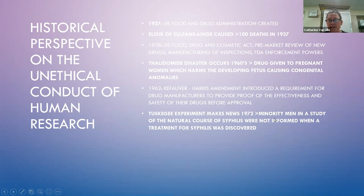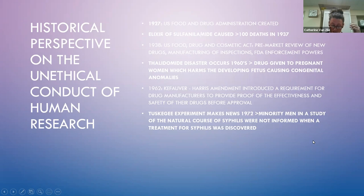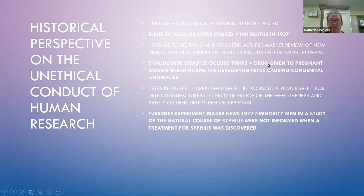The Tuskegee experiment made news in 1972: minority men were enrolled in a study of the natural course of syphilis, and they were not informed when a treatment for syphilis was discovered. It violated basic bioethical principles from 1932 to 1972. The purpose was to observe untreated syphilis — they were told it would be about six months long, but it took 40 years. These men were told they were being treated, but it was actually a placebo. Despite penicillin becoming widely available in 1947, researchers continued not treating them just to observe what happened.